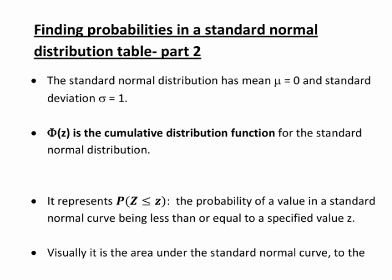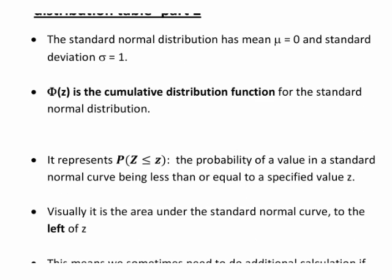This recording is part 2 of a series on finding probabilities in a standard normal distribution table. The standard normal distribution has a mean of 0 and standard deviation of 1. Phi is the cumulative distribution function for the standard normal distribution, showing the probability of a value being less than or equal to z for all z — visually, it is the area under the standard normal curve to the left of z.